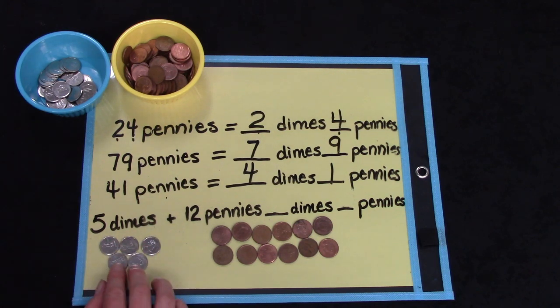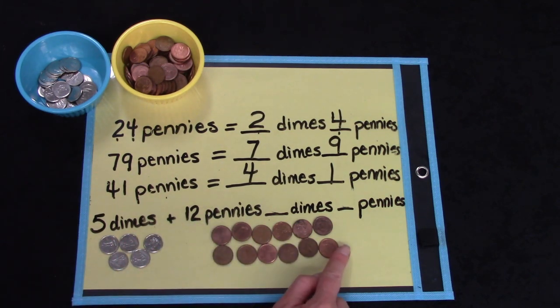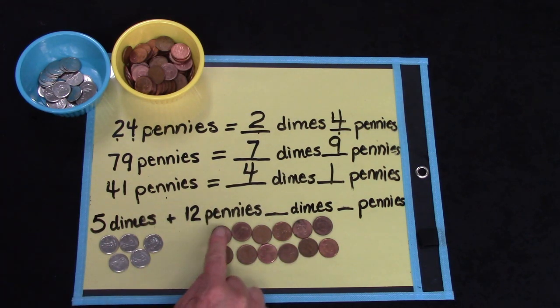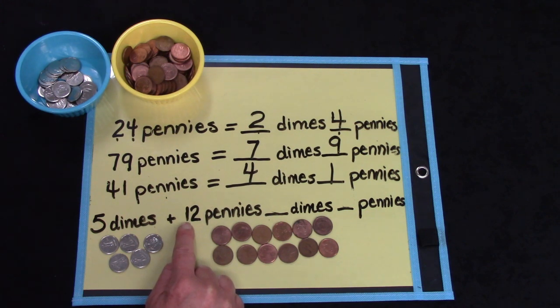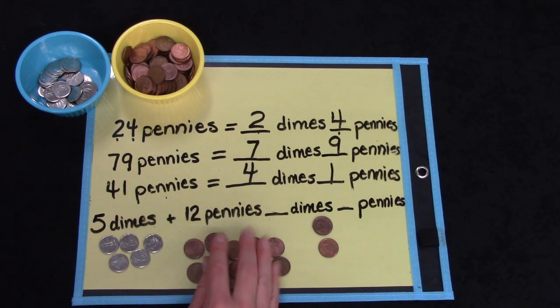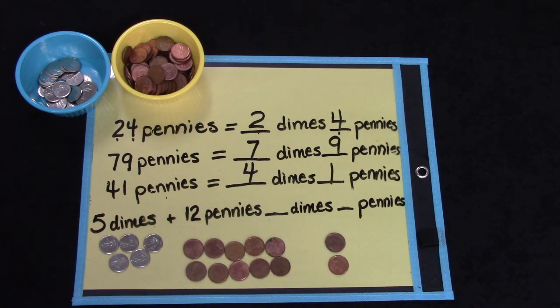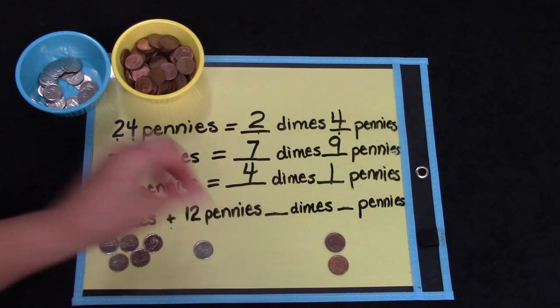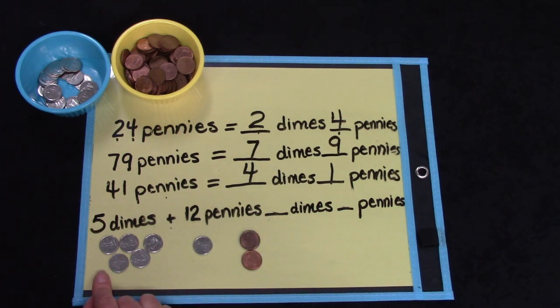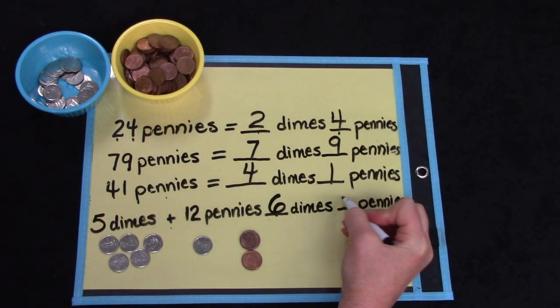How about this hard question? What if we have five dimes and twelve pennies? Well, we've got five dimes, but could we trade some of these pennies for a dime? We can. Look right here. In our tens place, we have another group of ten. 2, 4, 6, 8, 10. This is showing our group of ten, and this is showing our two left over. Hmm, so we can trade this group of ten for a dime. So how many dimes do we have all together? Yes, it is six dimes and two pennies.